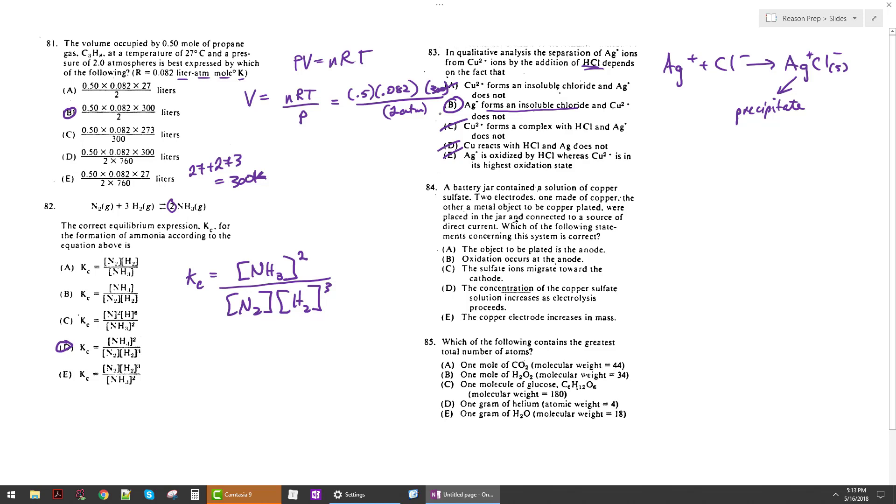Now for 84, this gets into electrolysis, which you don't really see that much. You should know the basic idea of electrolysis that you have to put energy into the system in order to drive the reaction. It's not something that happens spontaneously. Beyond that, I don't think you really need to know much. So we're going to run through this one quickly. In fact, this one can be answered basically after knowing, just by knowing some stuff about redox. So for B, oxidation does occur at the anode in any kind of electrolysis reaction or electrochemical reaction. Because remember this little mnemonic, anox, anode oxidation. That is true.